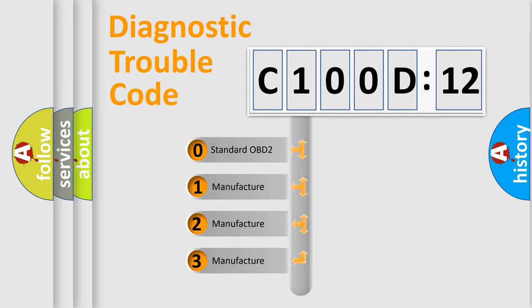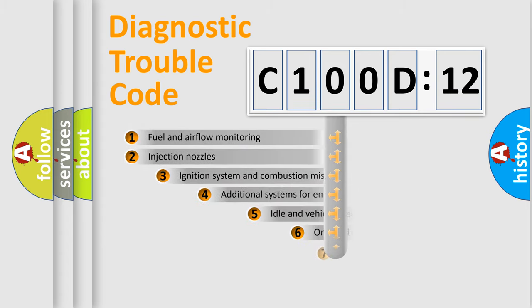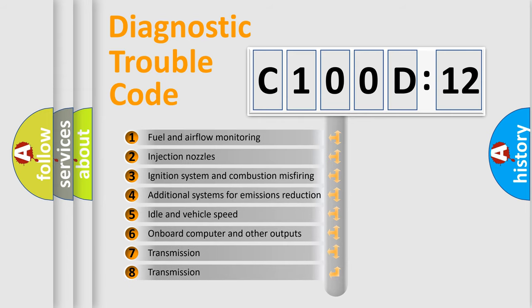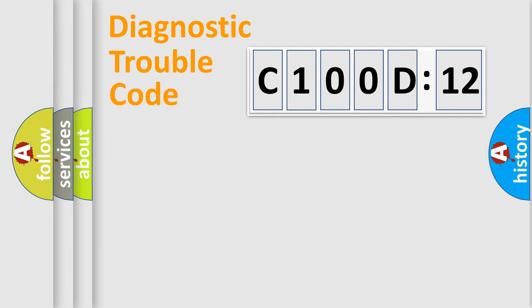If the second character is expressed as zero, it is a standardized error. In the case of numbers 1, 2, 3, it is a manufacturer-specific expression of the car-specific error. The third character specifies a subset of errors. The distribution shown is valid only for the standardized DTC code. Only the last two characters define the specific fault of the group.